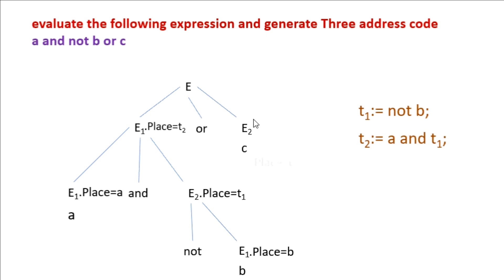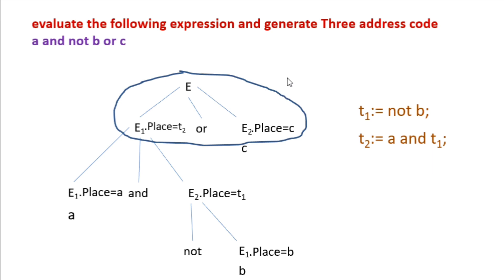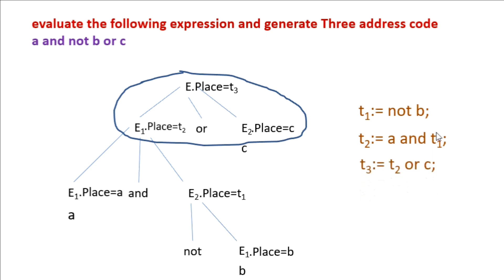Now we evaluate the topmost node of the tree, which is E → E1 OR E2. We create a new temporary variable t3 since t1 and t2 are already created. The three-address code is E.place = E1.place OR E2.place — where E.place is t3, E1.place is t2, and E2.place is c. So the final emitted code is: t3 = t2 OR c. This is the way of evaluating three-address code for a logical expression.